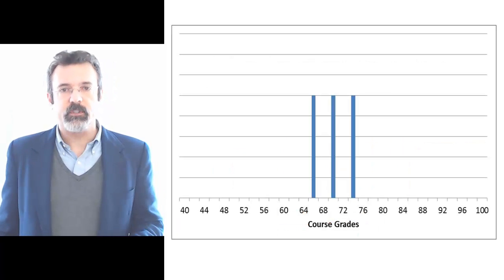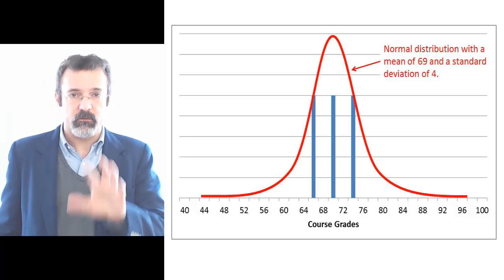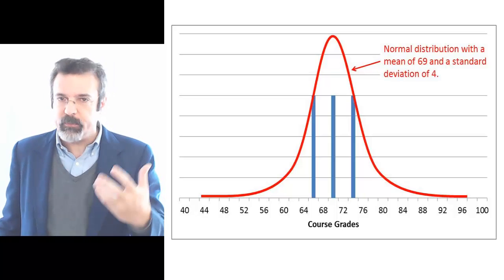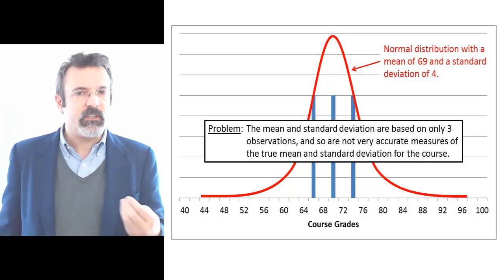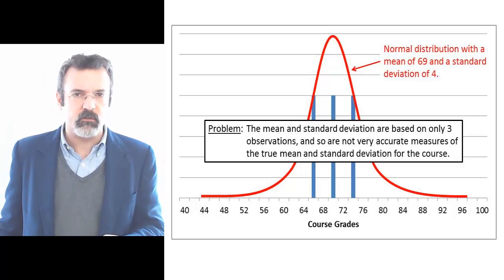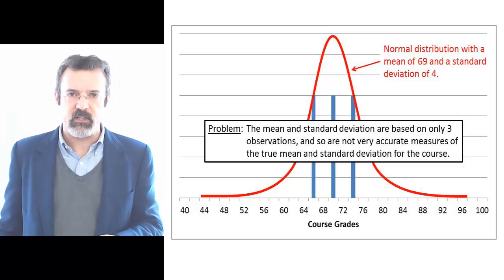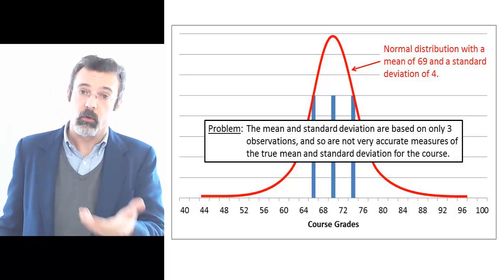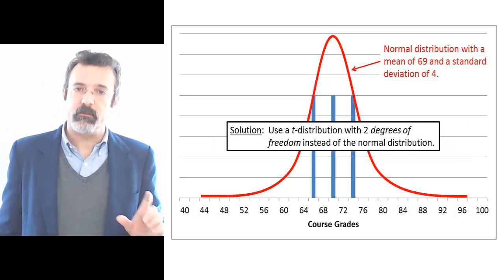If we were to use the normal distribution, we would take a normal distribution with a mean of 69 and a standard deviation of 4 and ask questions about that distribution to find the probability of getting a B in the course. The problem is that because we have only three observations, this sample mean of 69 and sample standard deviation of 4 may not be accurate estimates of the population mean and population standard deviation. And to the extent that these estimates are inaccurate, we may end up looking at the wrong normal distribution. So the solution is to use a T distribution with two degrees of freedom.